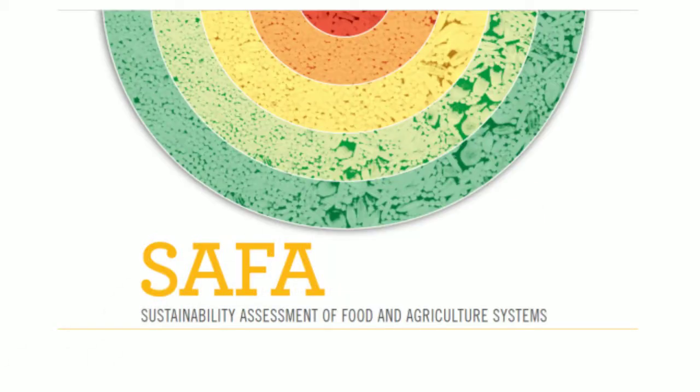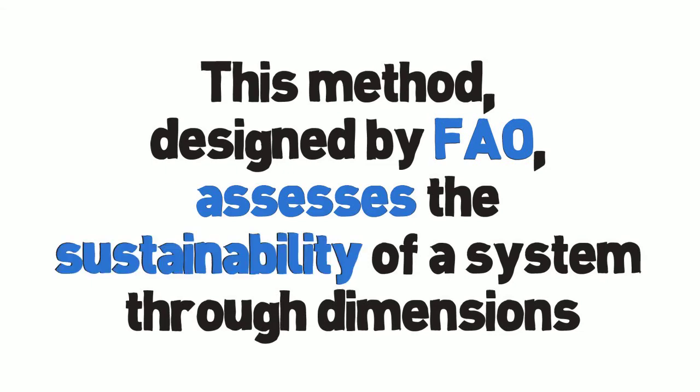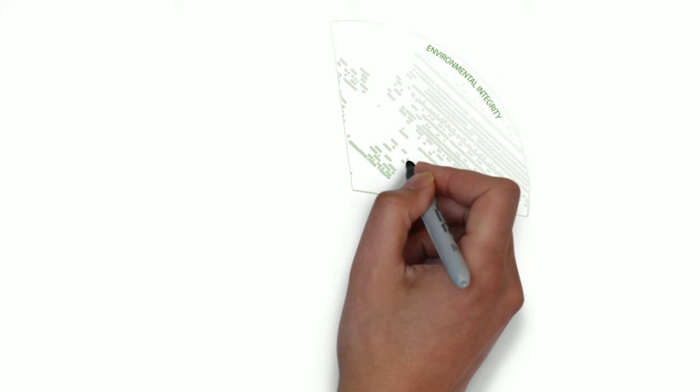SAFA, sustainability assessment of food and agriculture systems. This method designed by FAO assesses the sustainability of a system through dimensions: environmental integrity,